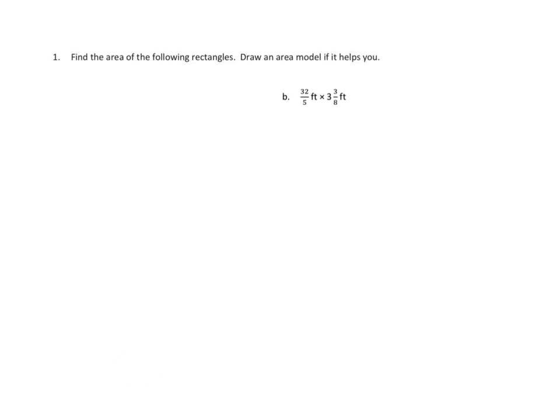Okay, my solution to that problem is that I'm going to convert this improper fraction to a mixed number. How many fifths make up a whole? Five fifths would make up a whole. So how many wholes do we have when we have 32 fifths? 5, 10, 15, 20, 25, 30. We have six wholes. I think this is the same as 6 and 2 fifths feet times 3 and 3 eighths feet.